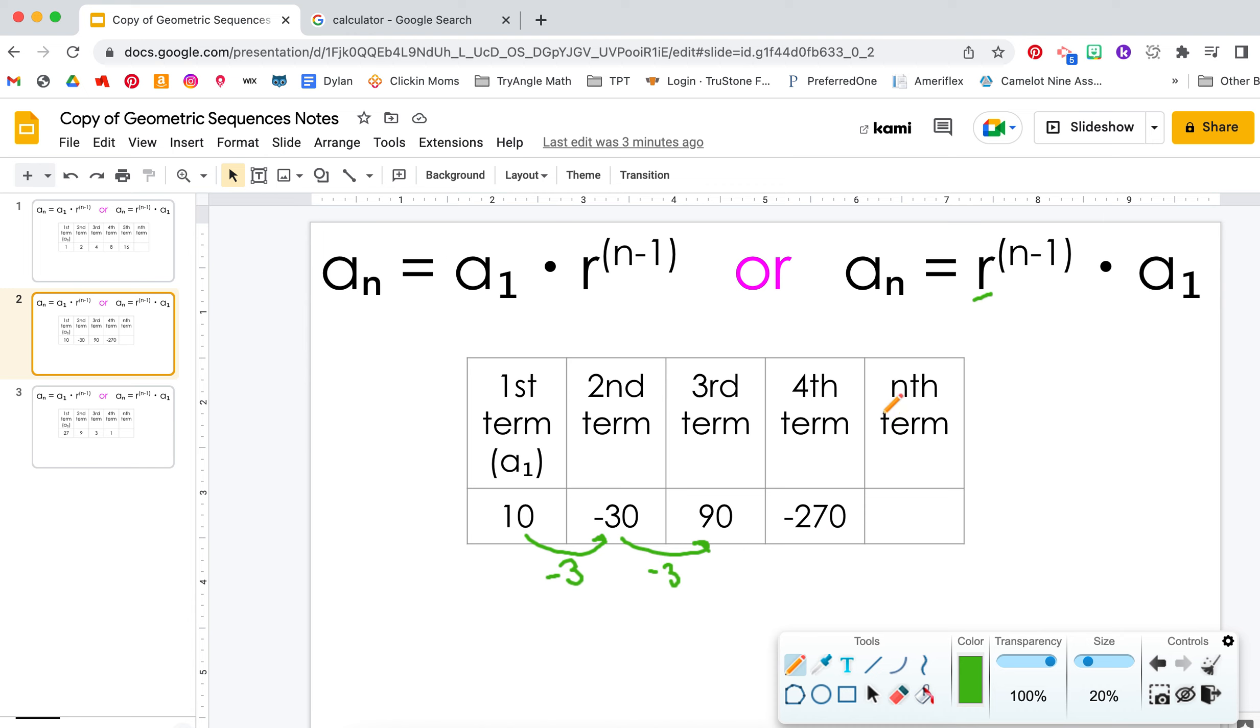So let's say we're going to solve for the 10th term here also. So our equation, a sub n, and then common ratio is negative 3 to the power of 9, because 10 minus 1 is 9, and then times it by our starting number, which is 10.